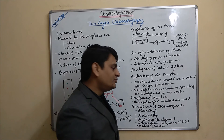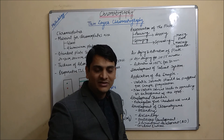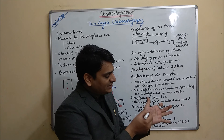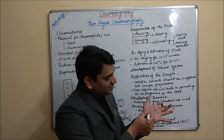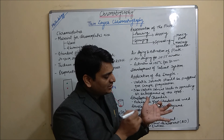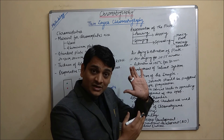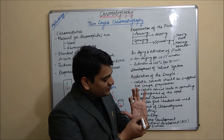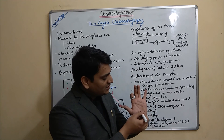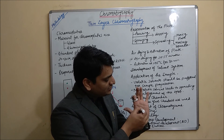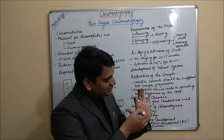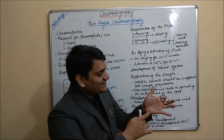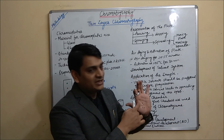Now coming to the next one, which is two-dimensional development. In two-dimensional development, first we have to put our spots and run the plate in the first dimension. If two compounds are there, then it is run again in the second dimension and it will give two-dimensional separation — first dimension, then second dimension.